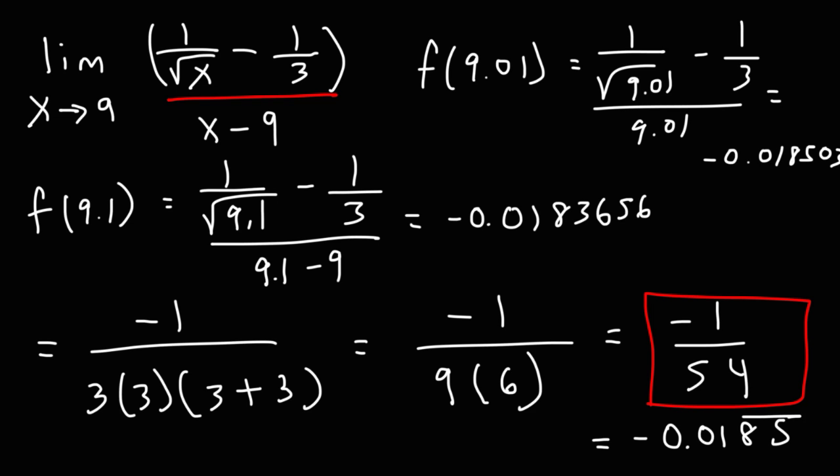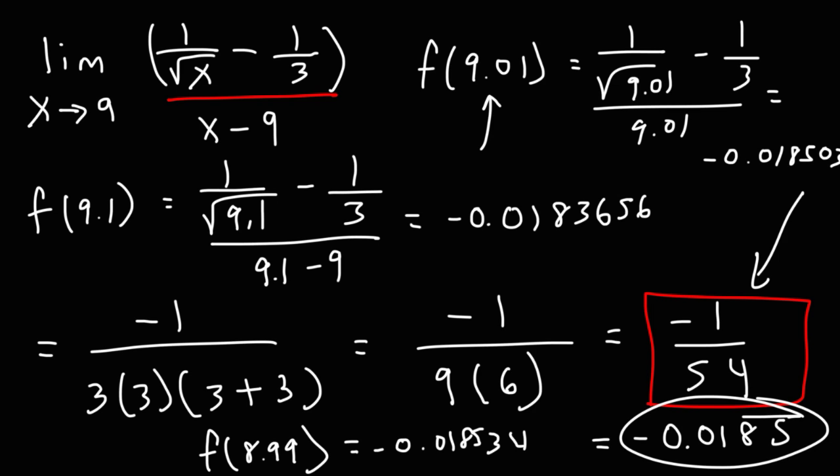As you can see, as x approaches 9, the function approaches this value, negative 0.0185. Now, if you want to check it from the left side, that is, if you want to plug in 8.99, you should get negative 0.018534. So this just confirms that our answer is indeed correct.